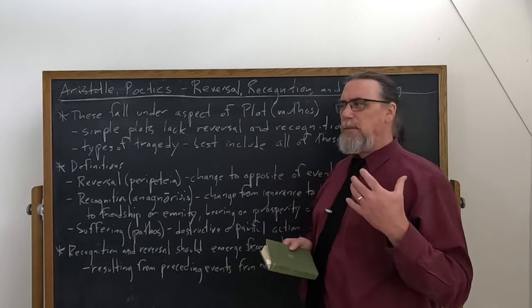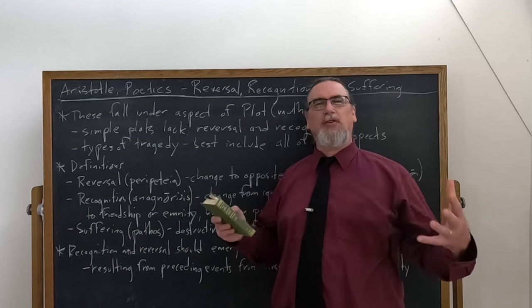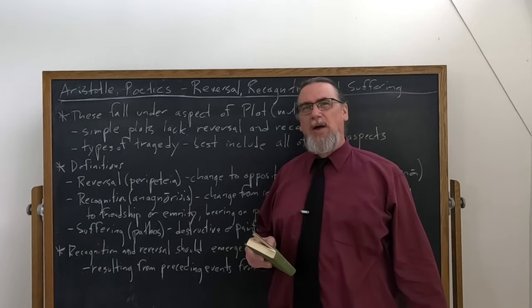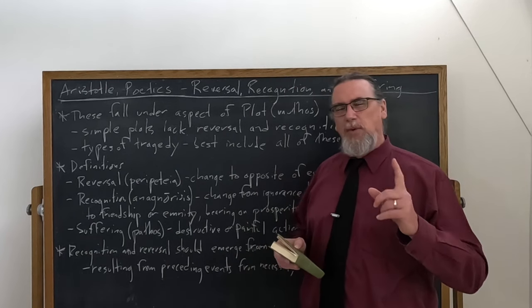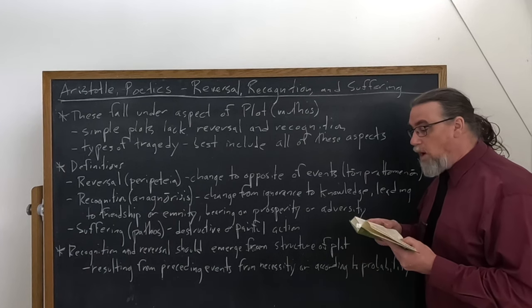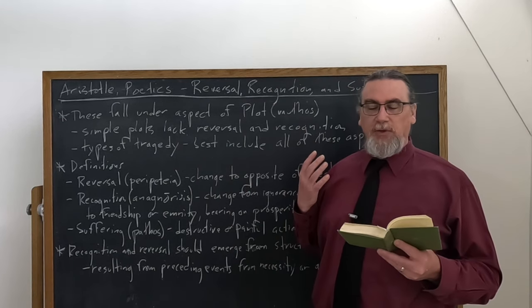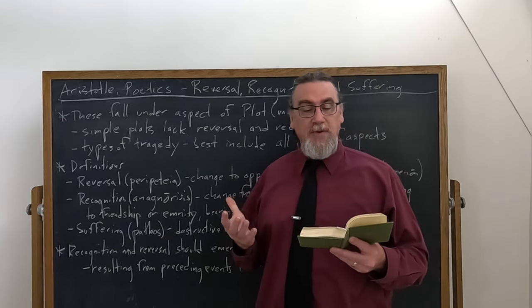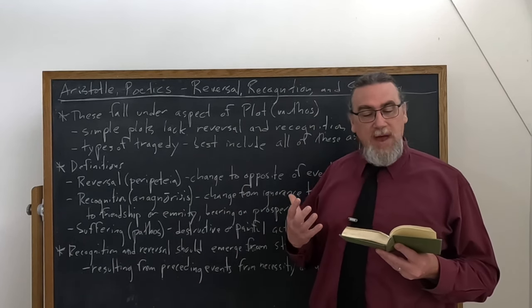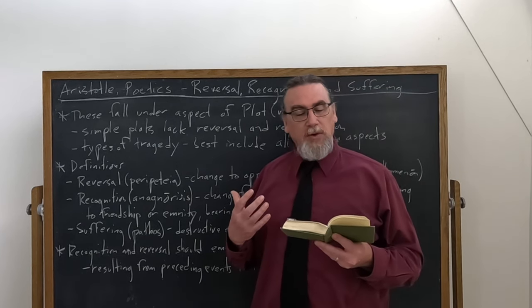Aristotle is a big critic of things that don't really make sense and are just thrown together in episodic manners that haven't been adequately thought through by the producer, the poet. He tells us that what we want here is that these elements should emerge from it so that they occur or develop, they come into being from preceding events.